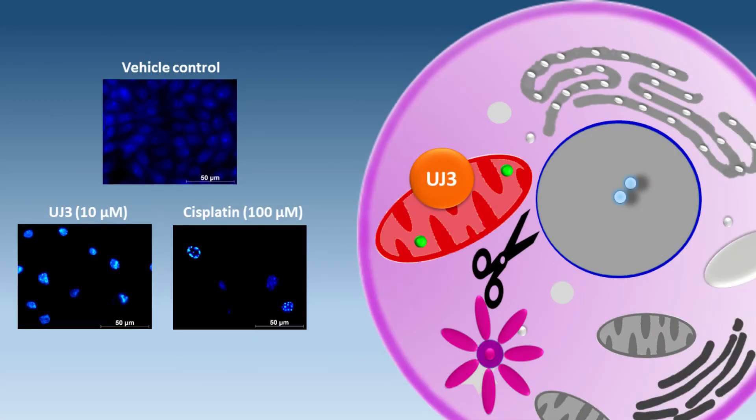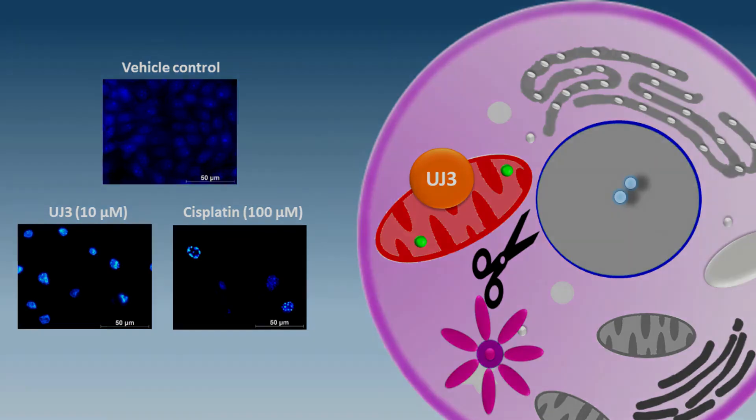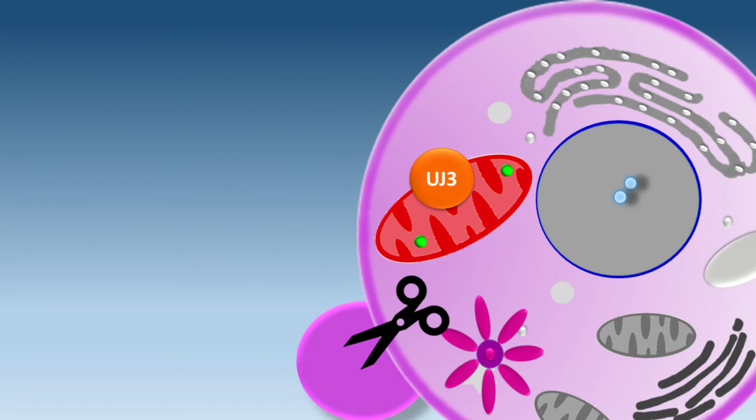This cisplatin image shows the same, after treatment with 100 micromolar of the complex. After this, the last phase of apoptotic cell death begins.